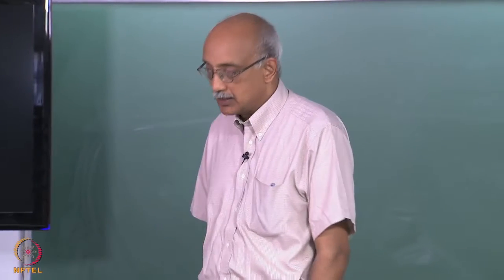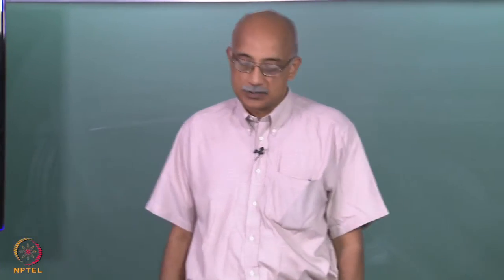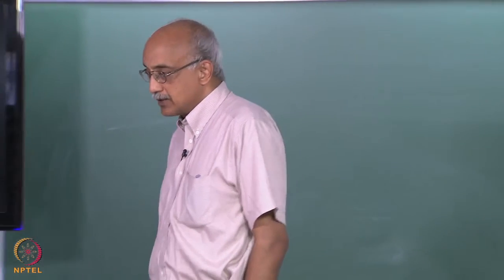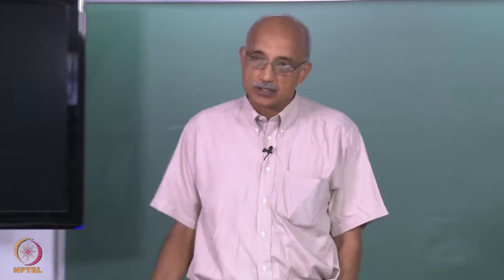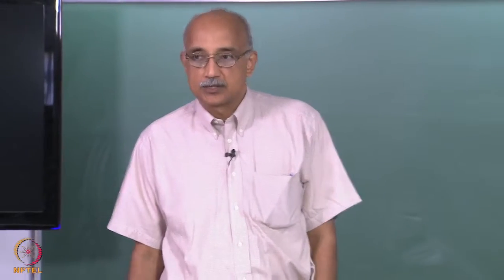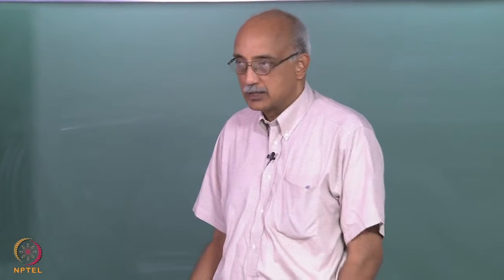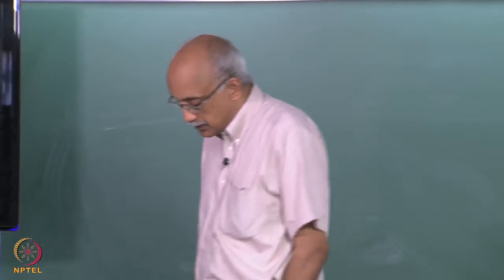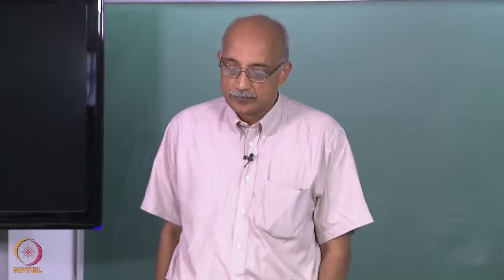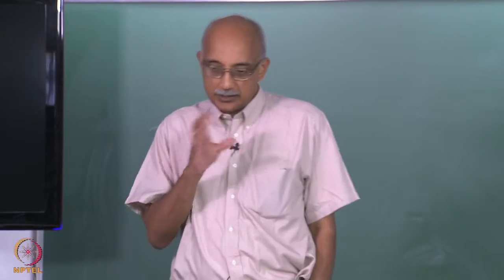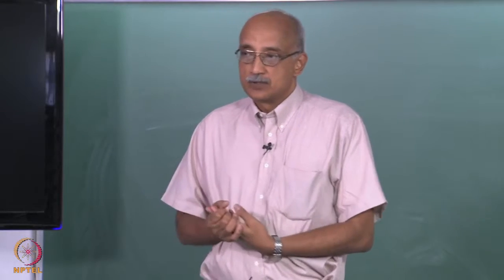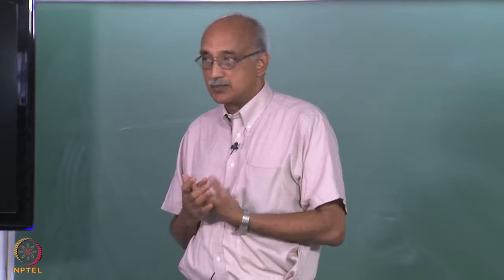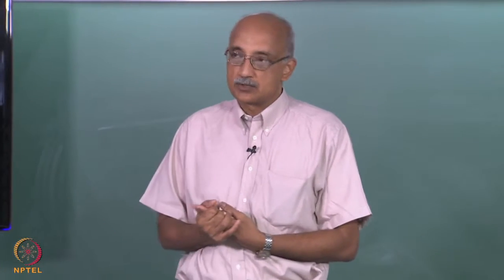Good morning and welcome to the next lecture in our course on chemical engineering principles of CVD processes. In the last couple of classes we looked at an unconventional, non-traditional CVD process: what happens in tungsten filament incandescent bulbs where the tungsten evaporates from the filament and deposits on the bulb walls. We saw how by taking a simple PVD process and providing appropriate chemistry, you can convert it into a CVD process and actually prevent the deposition of tungsten from taking place.